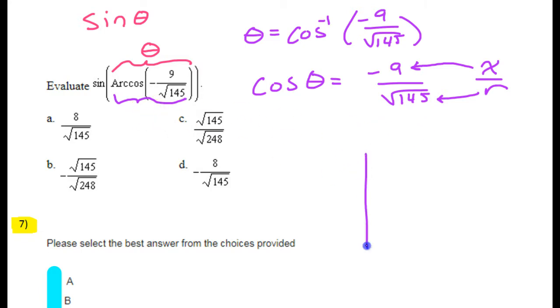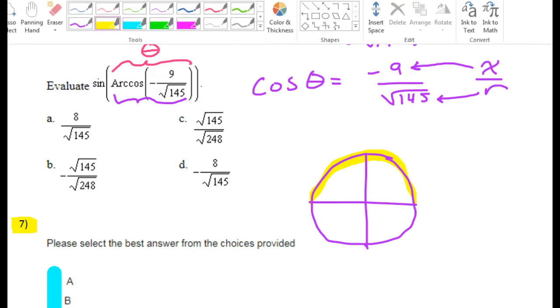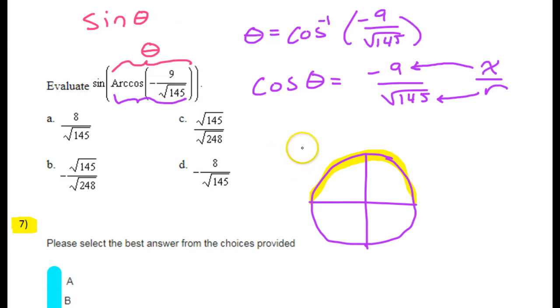Now, here's something that you need to know. Inverse cosine or arc cosine is not defined everywhere. It's limited. So you need to memorize this or write this down. Inverse cosine is only defined for the top half of the unit circle. So inverse cosine is only defined here.